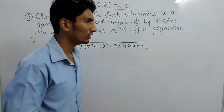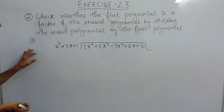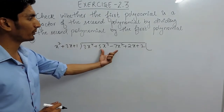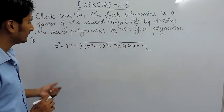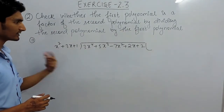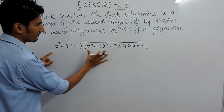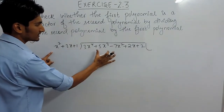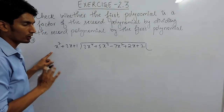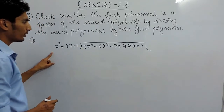Hello everyone. In this video we are going to solve part 2 of question number 2. Again, you have to check whether this is a factor of this polynomial. In the previous part we have already discussed about this; in this we are directly solving this question. We are dividing this by this and checking whether the remainder is 0 or not. If the remainder is 0, obviously this is a factor for this polynomial.